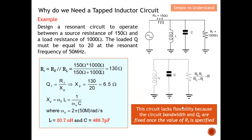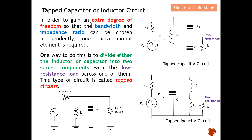Once Rs and RL are fixed, you basically can't control your bandwidth anymore. In order to gain an extra degree of freedom to control bandwidth and impedance ratio, one extra element — whether a capacitor or inductor — can be added to the circuit. This is a parallel resonator because all components — L, C, and R — are all connected in parallel.